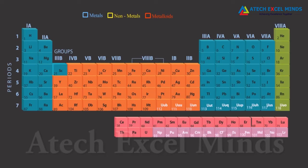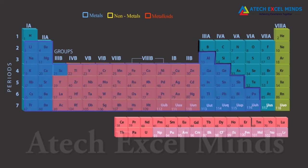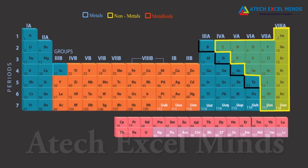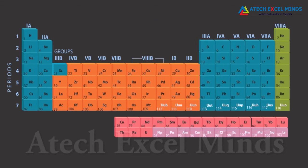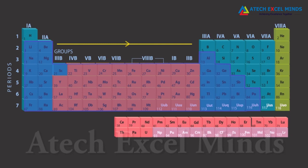Metals and non-metals are separated in the periodic table by a zigzag line. To the left of this line, metals are placed, and non-metals are on the right side. The borderline elements like boron, silicon, and many more are metalloids, which possess properties of both metals and non-metals.